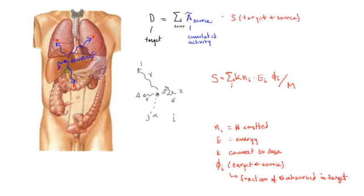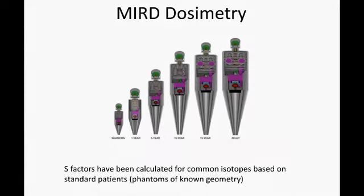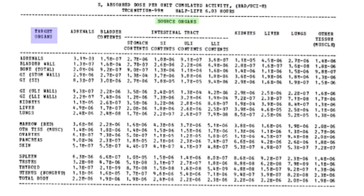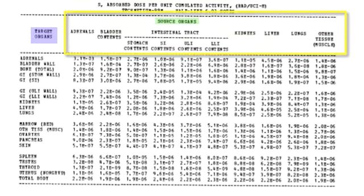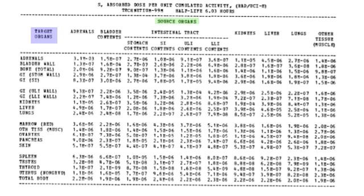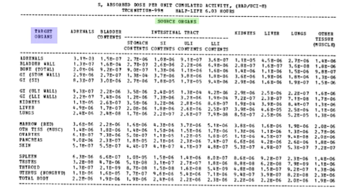This may seem very complicated, but the reality is people don't calculate these factors themselves. It's all done for us - there are tables. These S factors have been calculated using common isotopes based on standard patients, which are phantoms of known geometry. Here's an example of one such table for technetium-99. Every radioisotope will have its own table because the physics is completely different. You can look up the source organ on the top and the target organ along the left, then find what the S factor is for that combination.